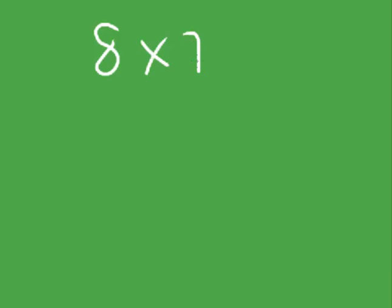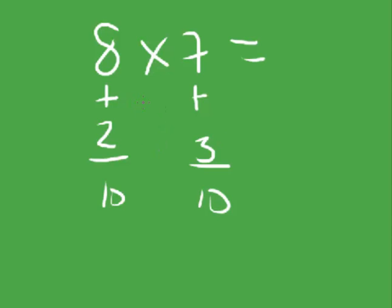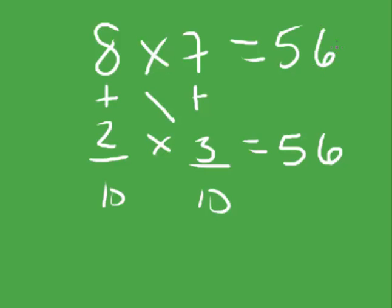8 times 7 equals... So we have 8 plus 2 equals 10. We have 7 plus 3 equals 10. And if I do 8 minus 3 equals 5, and 2 times 3 equals 6. So the answer 8 times 7 is 56.